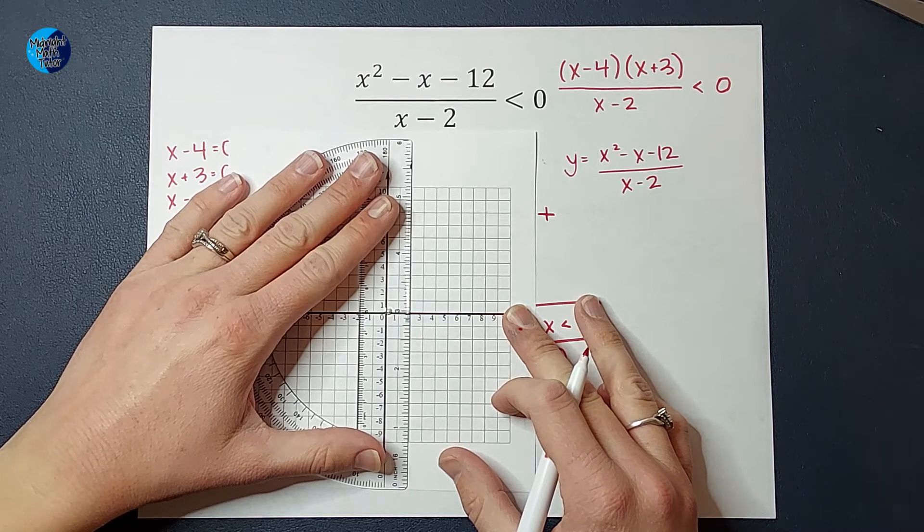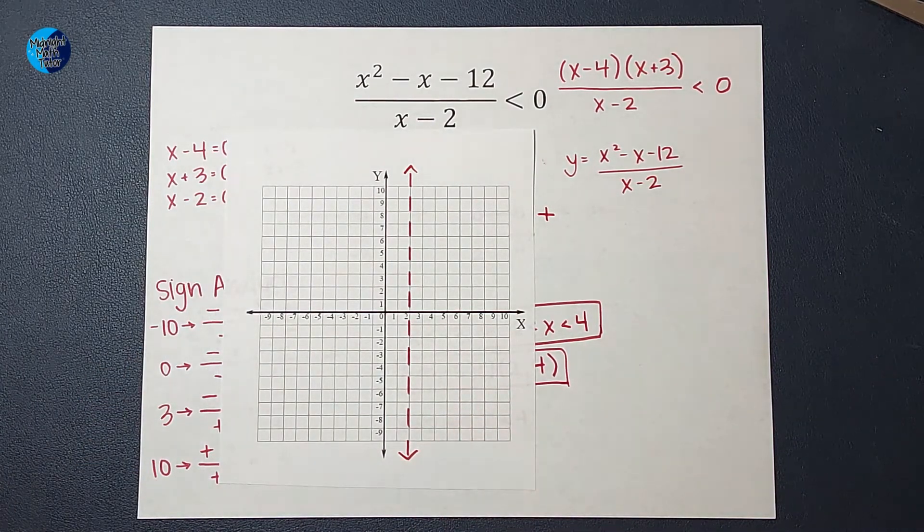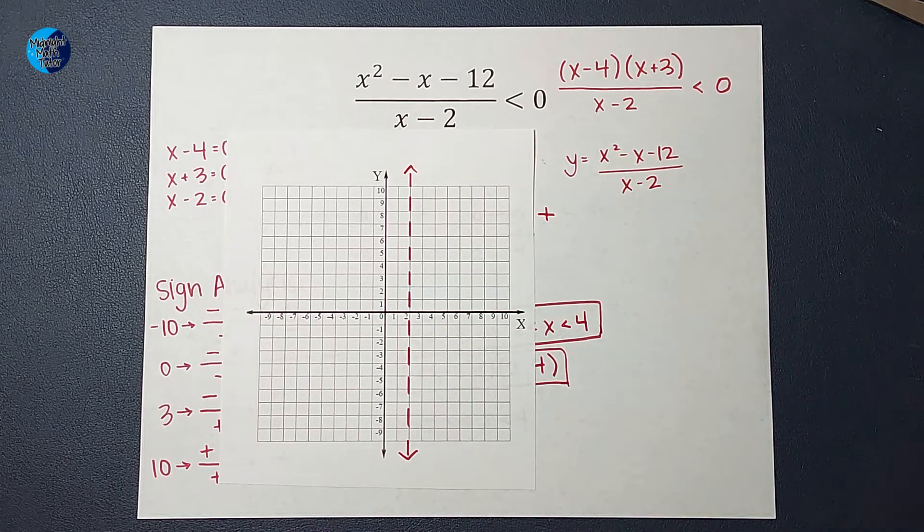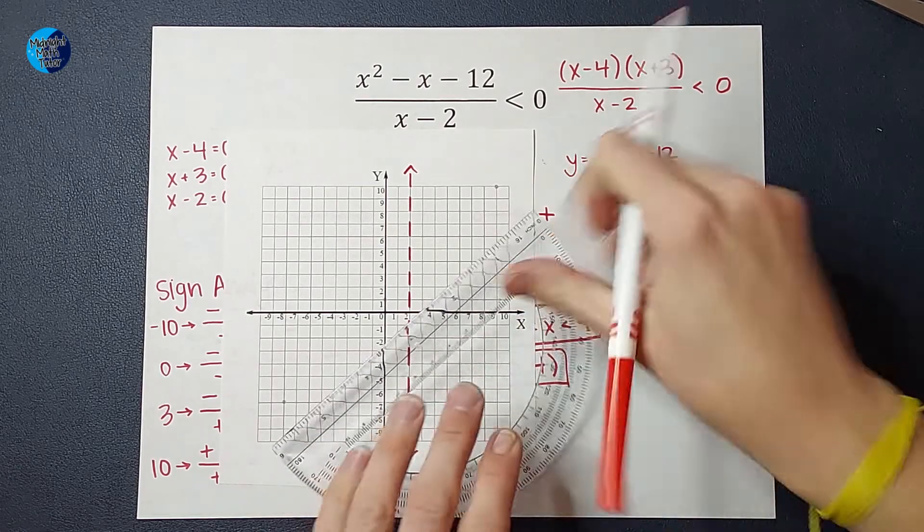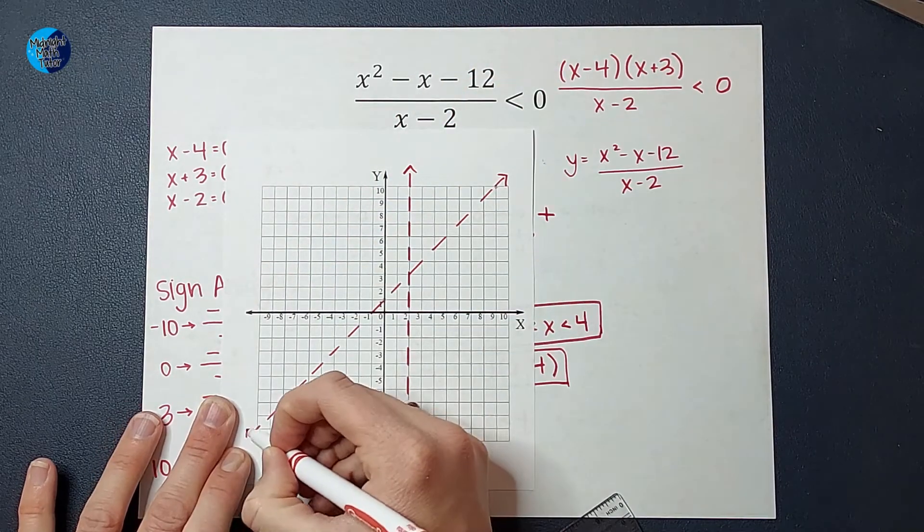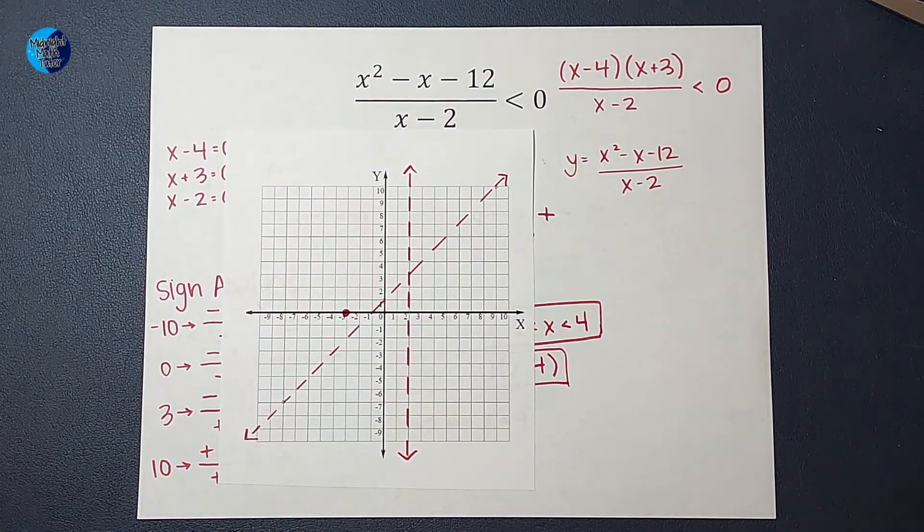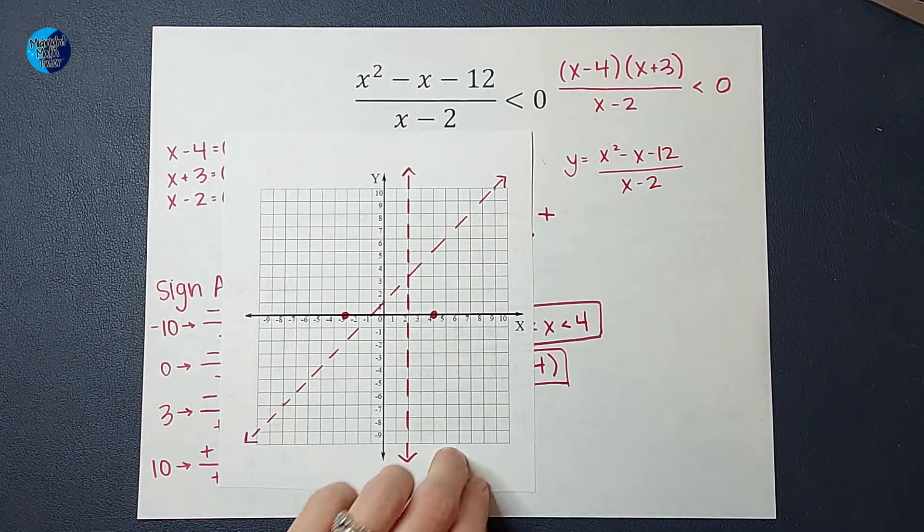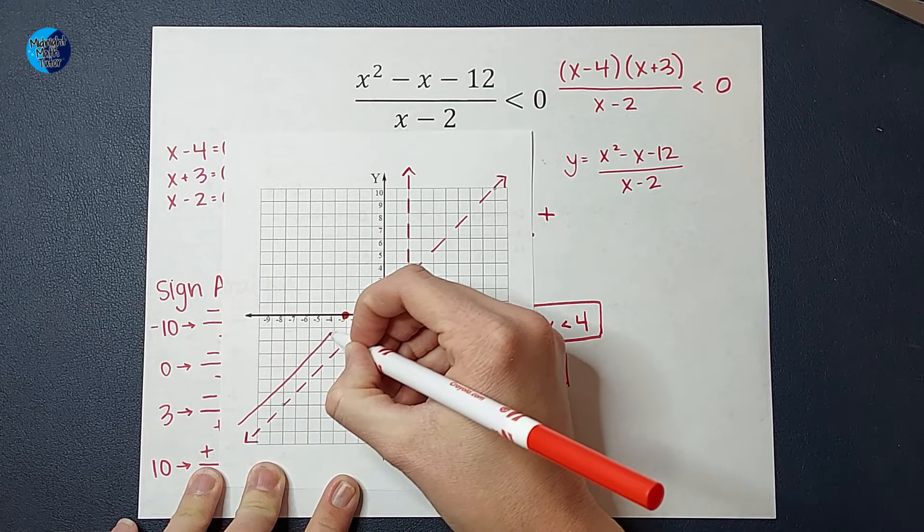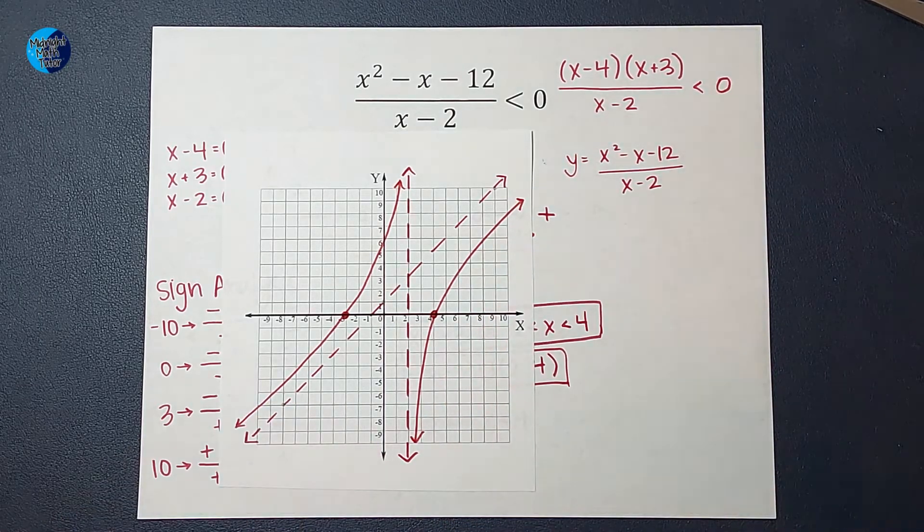If I were being asked to graph this, I would first figure out where my vertical asymptotes are by setting the denominator equal to 0. And I would figure out that I have a vertical asymptote at 2. The next thing I would do would be to look at my degrees and I'd figure I don't have a horizontal asymptote, but I do have a slant asymptote at x + 1, which would look something like this. Then I would find my x-intercepts, which are at -3 and 4. Then applying what I know about functions and asymptotes, I would figure out that this graph looks something like this.